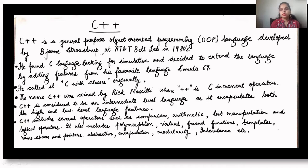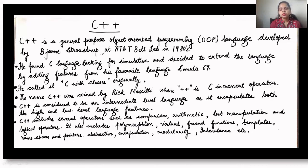Rick Mascitti coined the name C++ as the higher version of C. The '++' refers to the C increment operator. When you add one to a value, the operator is '++', meaning you are giving an increment of one to a particular step. C++ is considered an intermediate level language that encapsulates both high and low level language features — it is a bridge between the two.